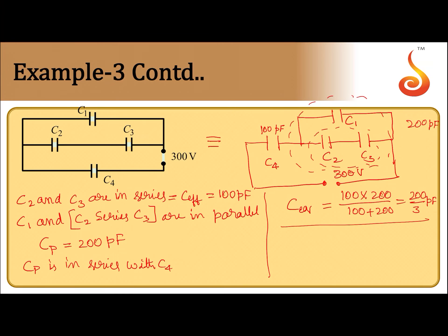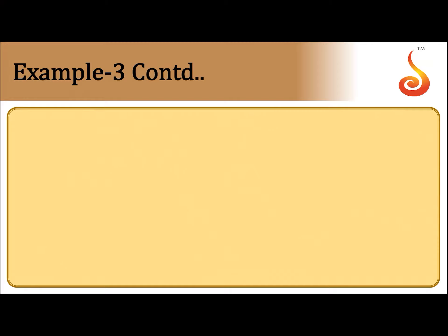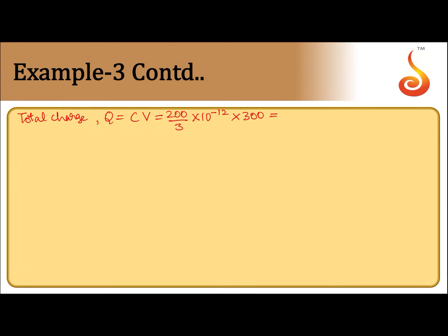Next we need to find charge and voltage across each capacitor. Total charge Q equals C times V — total capacitance is 200 by 3 into 10 to the power minus 12, and the potential is 300 volts, so that turns out to be 20 nanocoulombs. This is the total charge.